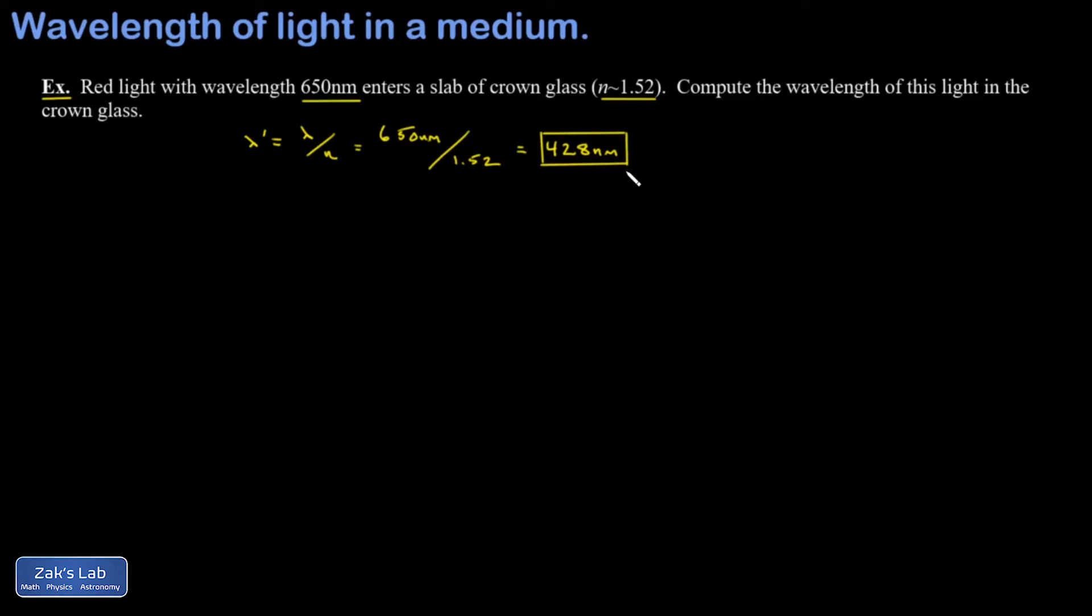So I want to make a quick comment on this because I've seen a lot of videos that do something wrong at this point. So this red light had a wavelength of 650 nanometers. Now it has a wavelength of 428 nanometers.